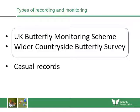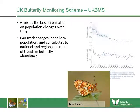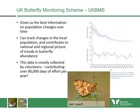For the rest of this talk I'll be looking at some of our monitoring schemes, focusing on the UK Butterfly Monitoring Scheme, the UK BMS. This gives us the best information on population changes in butterflies over time, and we can use it to track the local, national, and regional picture of butterfly abundance trends.